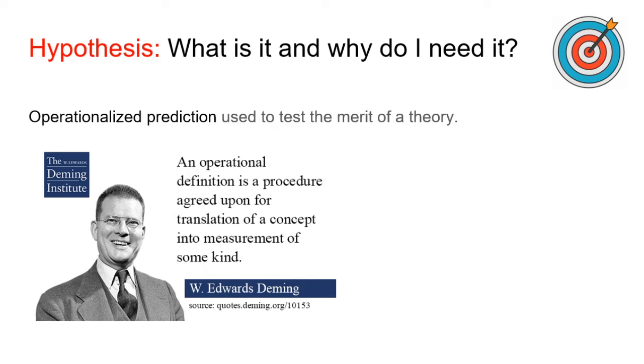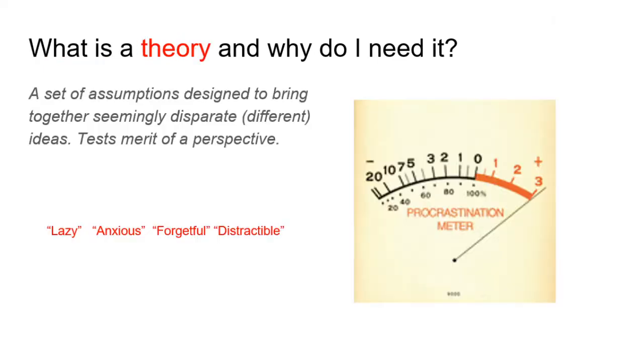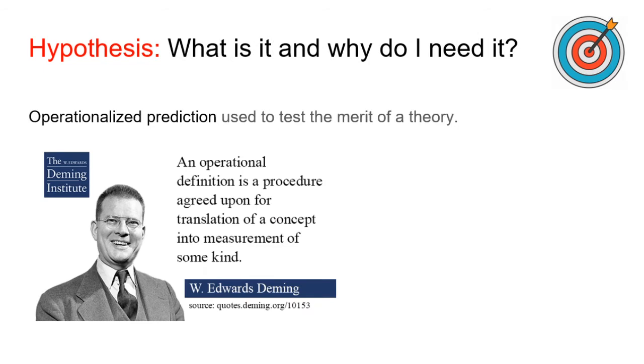In order to put that theory to the test, I've already said you have to make a formal hypothesis, which is nothing more than a testable prediction. In order to generate a hypothesis, you have to come up with very specific definitions of your variables. In the case of procrastination, we have to be very specific about how we're going to measure procrastination and how we're going to measure this element of the theory, whether it be laziness, anxiety, forgetfulness, or distractibility. And you'll want to pick one. An operational definition, then, is a procedure agreed upon for translation of a concept into a measurement of some kind. In other words, an operational definition, unlike a dictionary definition, is quantifiable. It's mathematical. It's scalable.